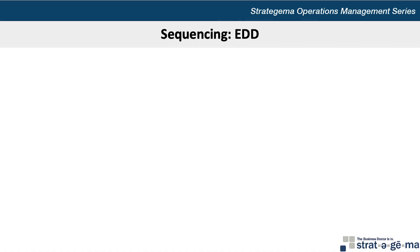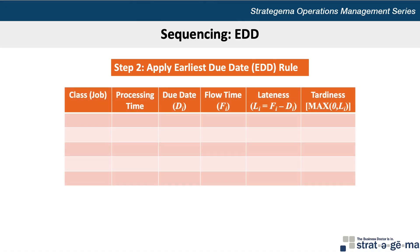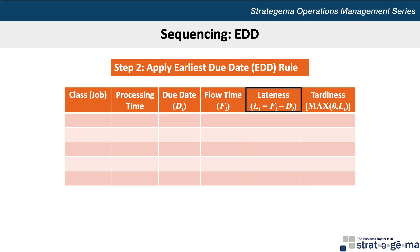Next, we will sequence the assignments according to the EDD, or earliest due date rule. I have a table here showing the job or class assignment, the processing time, due date (Di), flow time (Fi) which is the cumulative sum of the processing times, lateness (Li) which is the difference between the due date and the flow time, and tardiness, which is the amount by which the completion time exceeds the due date, and is the greater of 0 or the lateness.